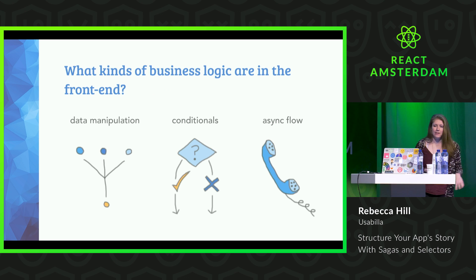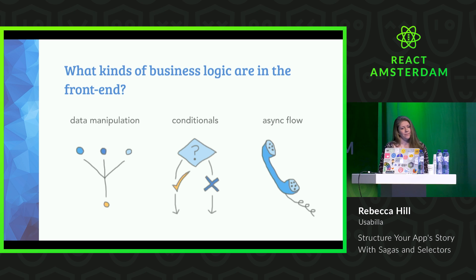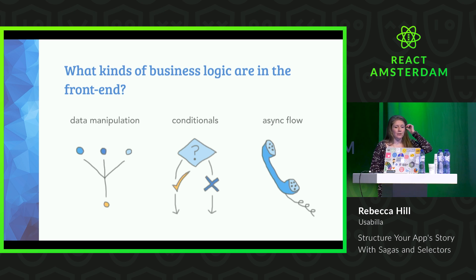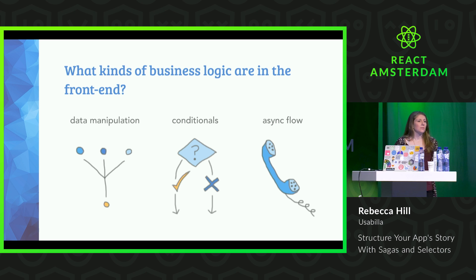Let's split the problem up into three main areas. Firstly, we have data manipulation — say we need to display a user profile, and some of the data might come from user input and some from an API endpoint, and we might want to merge that data in a specific way. Next up, we have conditional business logic — for instance, on Chrome, if a user has no internet access, then they get to be shown a really cute dinosaur game. And lastly, we have the area of asynchronous data flow — we might have an app that translates text real-time to emojis, and it needs some specific logic to make the calls to our translation service seem really smooth to the user.